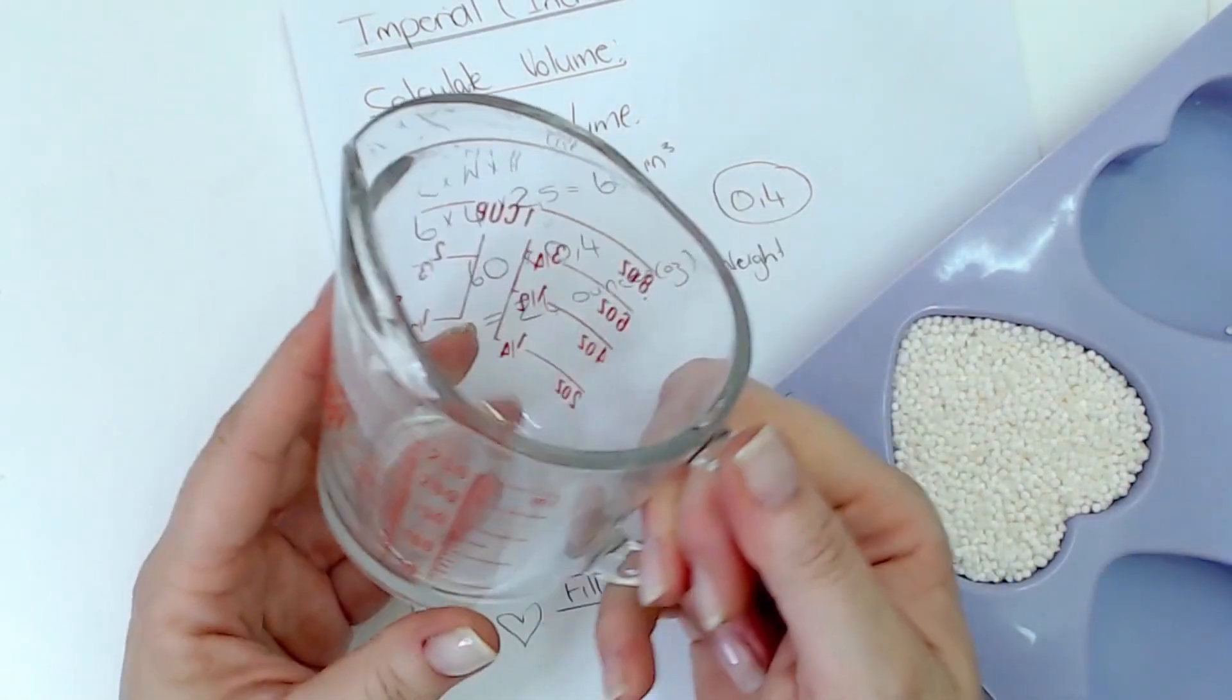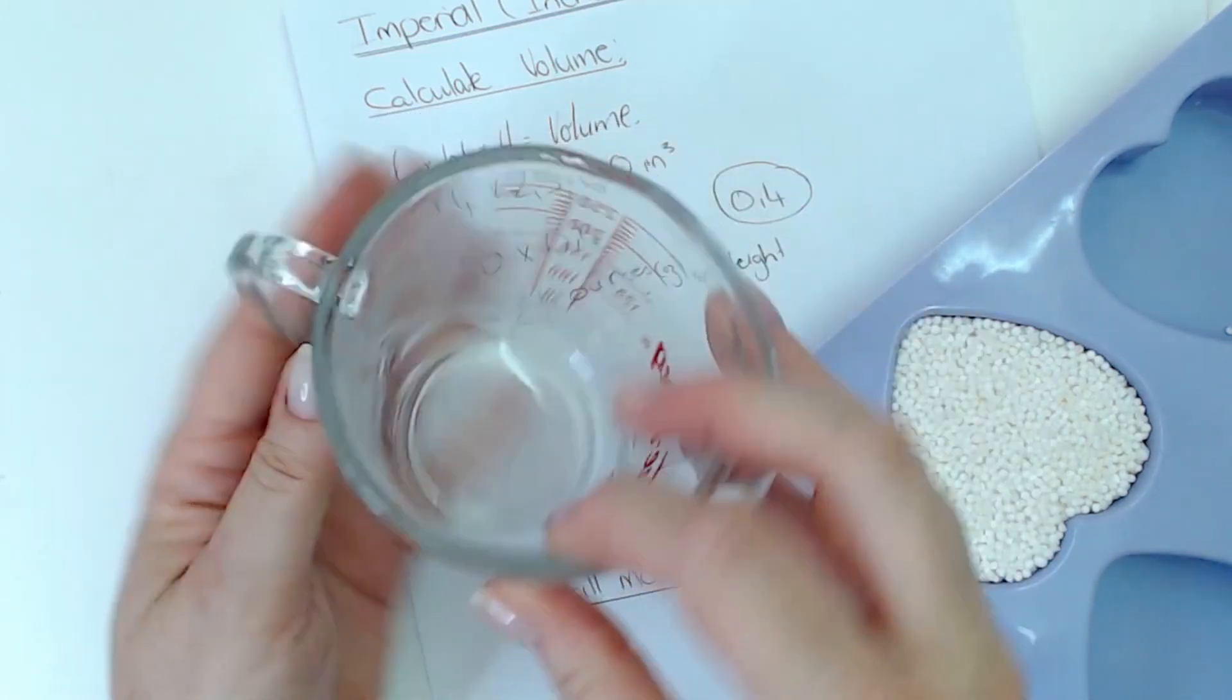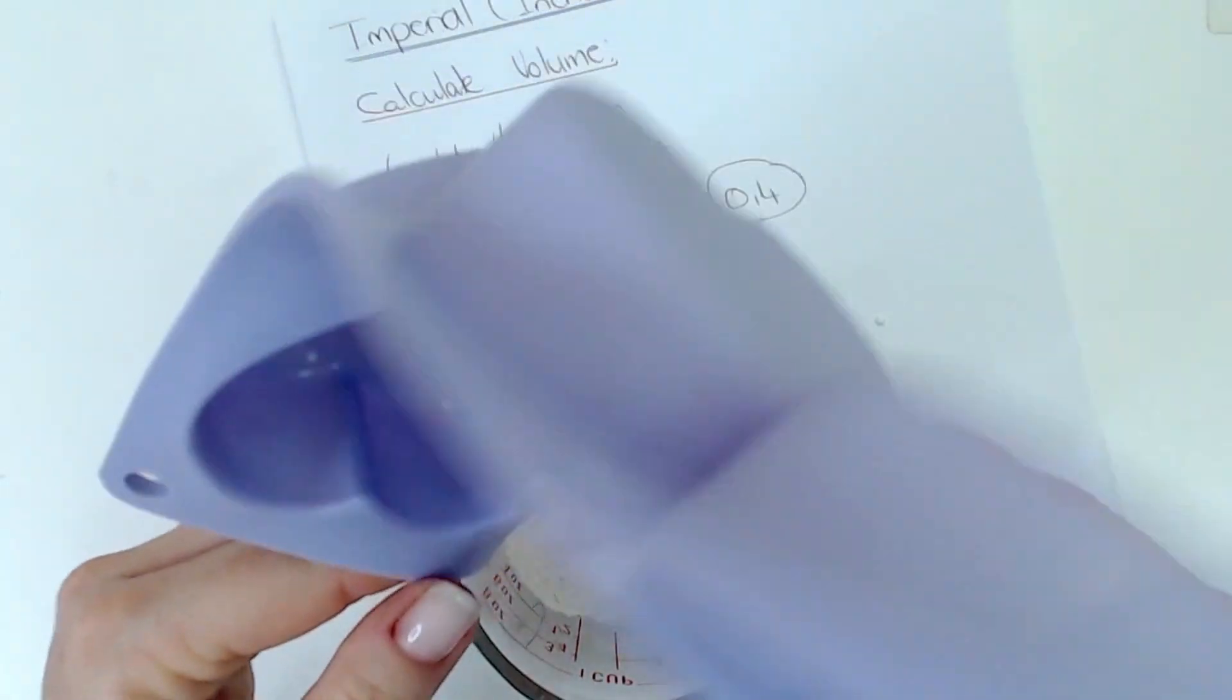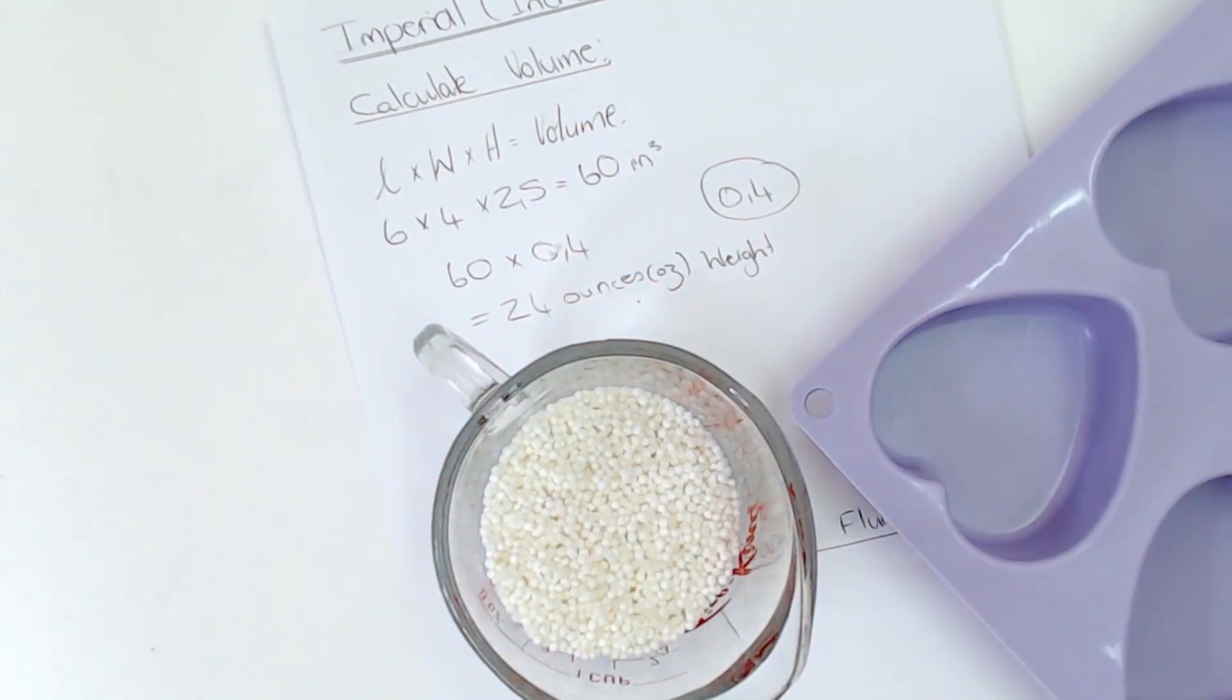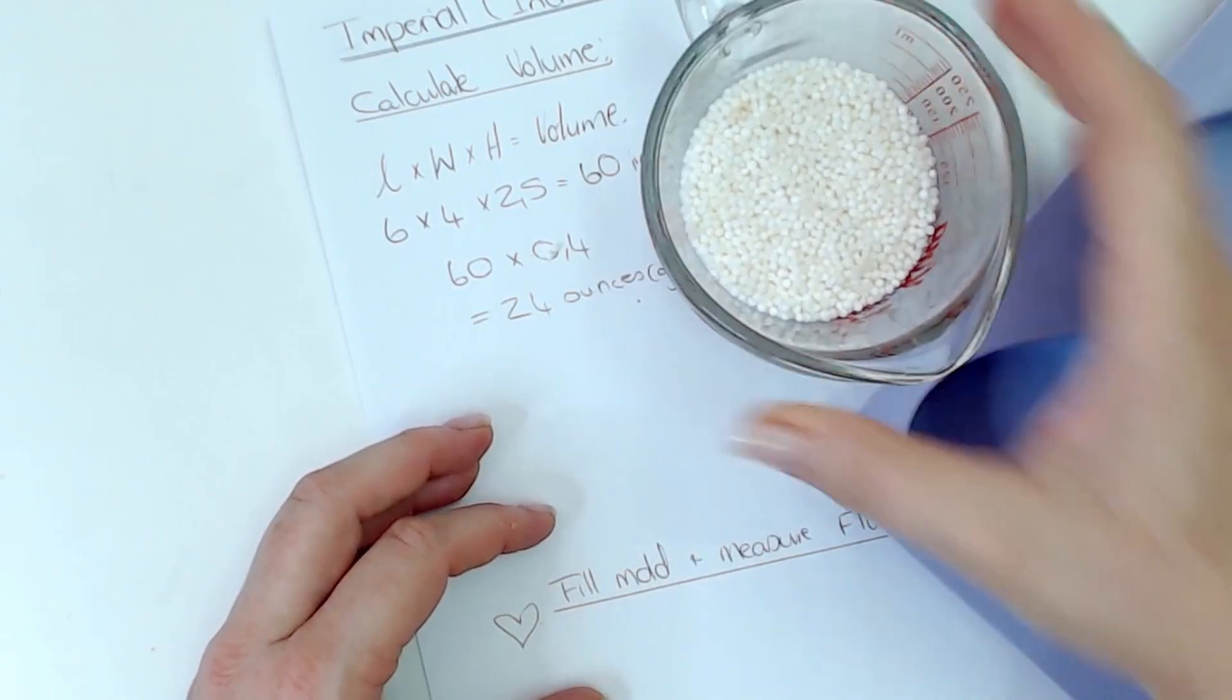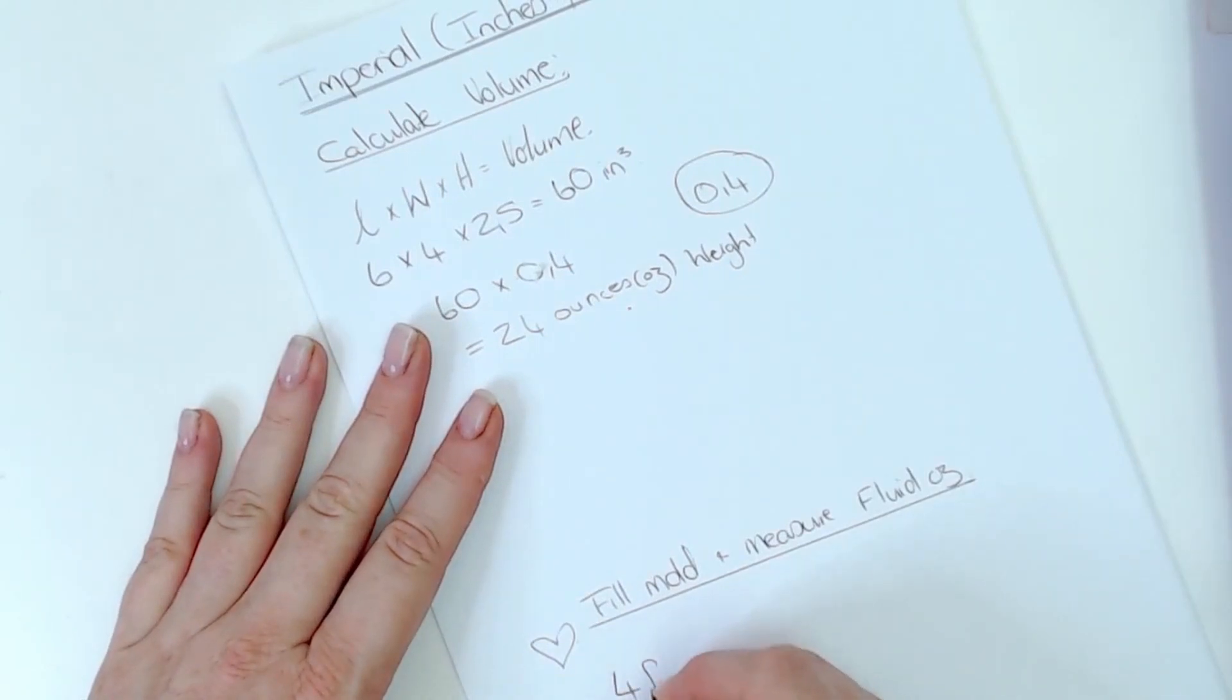Then you're going to take your cup and you are going to pour it into your cup and you're going to take the fluid ounce measurement on your cup. You're just going to shake it down and the fluid ounces here is four fluid ounces in this cup, so you're going to use that. So it is four fluid ounces.